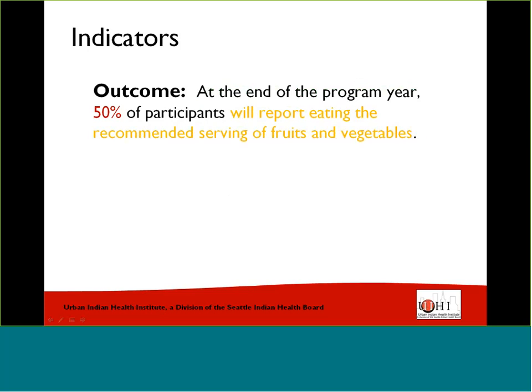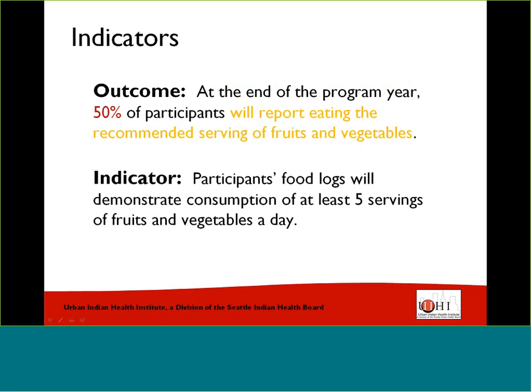For another example, the outcome statement is: at the end of the program year, 50% of participants will report eating the recommended serving of fruits and vegetables. This target outcome statement could have been less specific as a change statement such as 'improve nutritional intake,' but a specific outcome makes it easy to figure out what our indicators will be. An example indicator could be: participants' food logs will demonstrate consumption of at least five servings of fruits and vegetables a day. This indicator requires that food logs are a part of the program materials, or an input on our logic model.